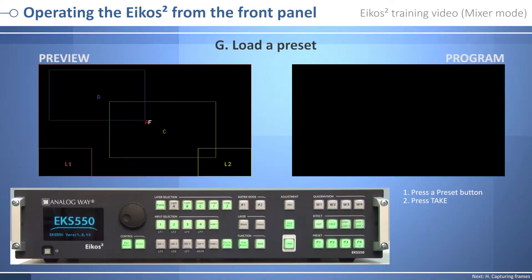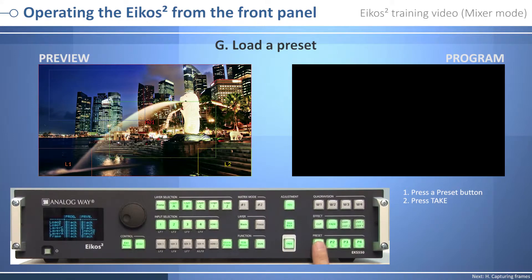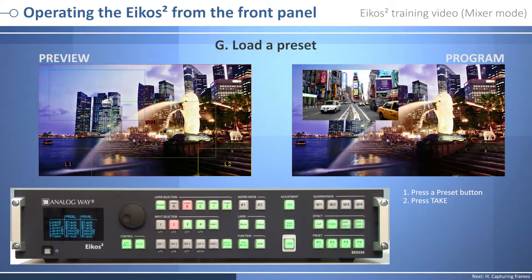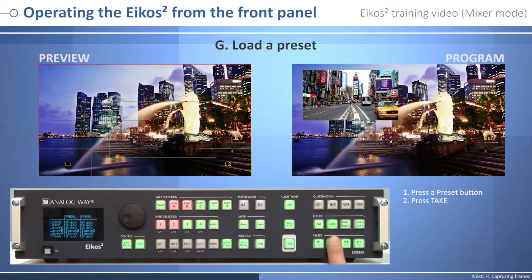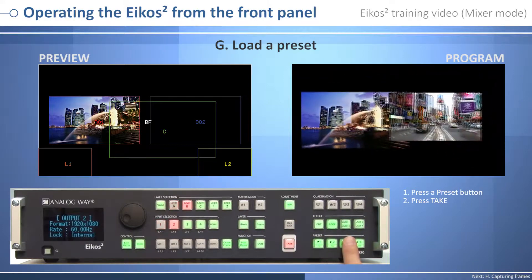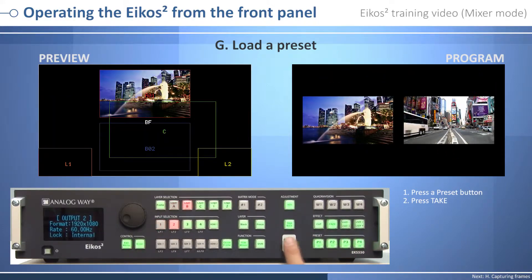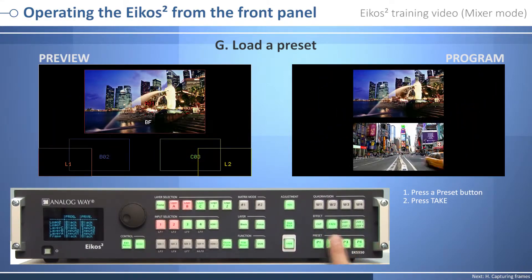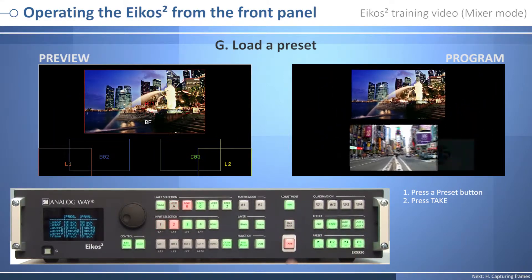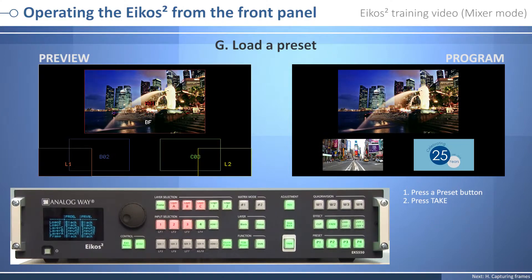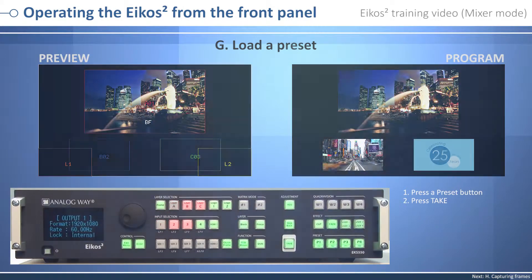Load a preset: the eight user presets of the ACOS 2 can be recalled at any stage during your show or event. Press one of the eight preset buttons to choose which memory number, one to eight, you wish to use. The preset will be displayed on your preview screen. Once you have selected your preset, simply press the Take button to view the result on your main screen.